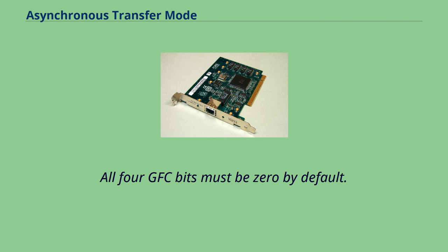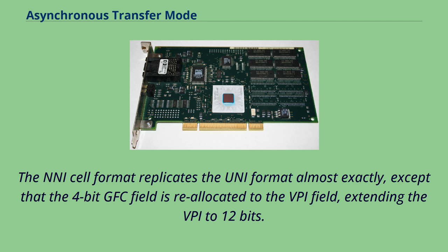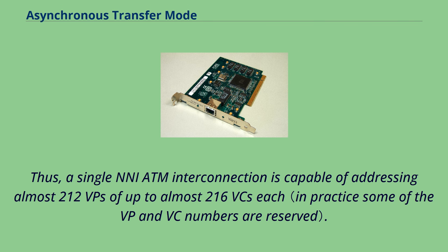The NNI cell format replicates the UNI format almost exactly, except that the 4-bit GFC field is reallocated to the VPI field, extending the VPI to 12 bits. Thus, a single NNI ATM interconnection is capable of addressing almost 2^12 VPs of up to almost 2^16 VCs each.